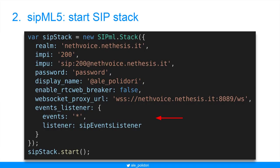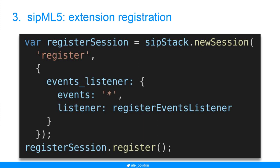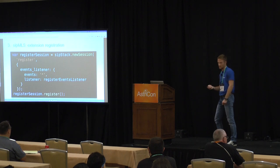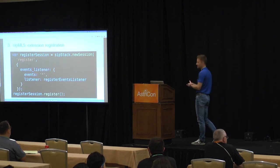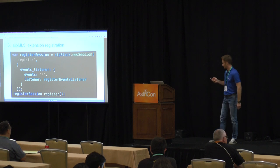These are all the data we need to specify: WebSocket URL, event listeners, and calling the start function. Then at this point we have to register the phone extension by calling the new session API on the already created SIP stack. We pass the word 'register' and also event listeners to manage all runtime operations, and we call the relative function.